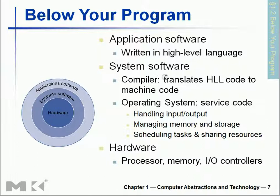System software: the compiler is the first system software that translates your high-level language and converts it into machine code in two steps. The operating system handles inputs and outputs, manages memory and storage — where, when, and how to use them — and schedules tasks and shares resources. It has a lot of responsibilities, and depending on how it uses these things, your performance shows something.